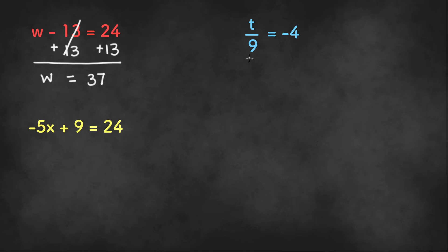In this example, we have t divided by 9 equals negative 4, and we need to isolate the variable t. Since t is being divided by 9, we need to multiply 9 to get rid of it. And we have to multiply 9 on both sides.